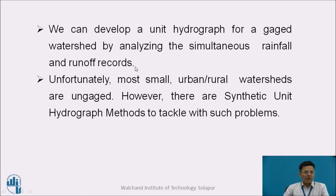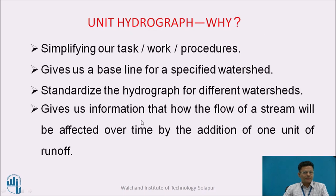We can develop a unit hydrograph for a gauged watershed by analyzing the simultaneous rainfall and runoff records. Unfortunately, most small urban or rural watersheds are ungauged — it means we do not have rain gauge stations or stream gauging there, so we don't have recordings. In such cases, we can also go for a synthetic unit hydrograph method to tackle such problems. The unit hydrograph simplifies our tasks, gives a baseline for a specific watershed, standardizes the hydrograph for different watersheds, and gives us information on how the flow of a stream will be affected over time by the addition of one unit of runoff.